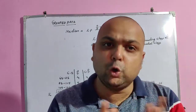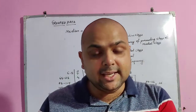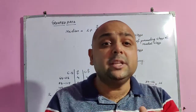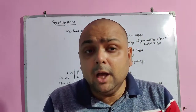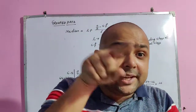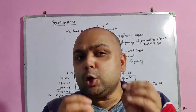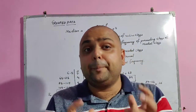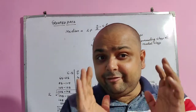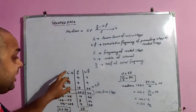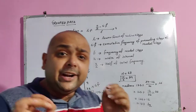In the formula, n/2 is half of the total frequency, cf is the cumulative frequency (sum of preceding frequencies), f is the frequency of the median class, and h is the width of the class intervals. To understand this better, let's do an example. We have a class interval given: 65–85, 85–105, and so on up to 205. The width h is 20, and frequencies are also given.